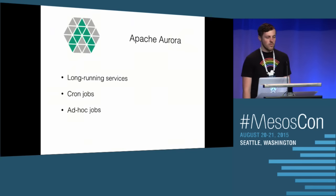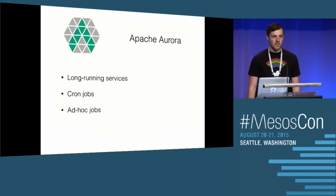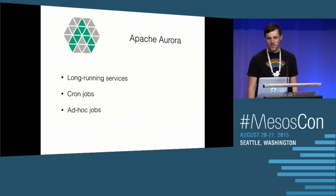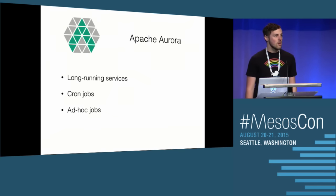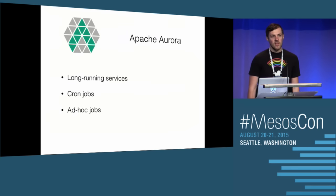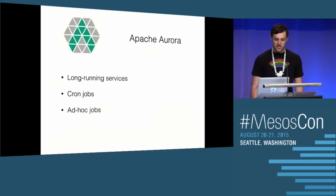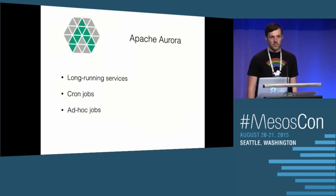As a brief overview, Apache Aurora is a Mesos framework — I'm going to be focusing on the scheduler portion of it. It's a general-purpose scheduler that handles different types of workloads: long-running services, cron jobs, and ad hoc jobs. A long-running service runs a hundred instances forever; a cron job runs on a schedule; an ad hoc job runs once and it's done. They all get translated into higher abstractions over Mesos tasks — bundles of Mesos tasks. So the scheduler needs to be really good at managing Mesos tasks.